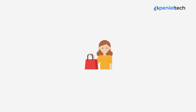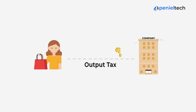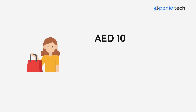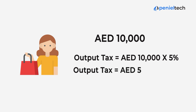Output tax is the tax consumers pay to the company for the end services or products they're availing. And if a consumer is availing goods and services for 10,000 dirhams, then the output tax would be 10,000 dirhams multiplied by 5% VAT, which equals 500 dirhams as the output tax.